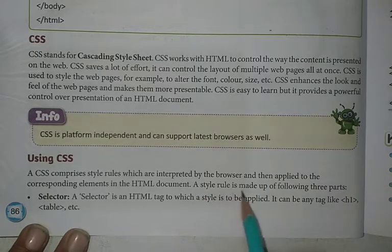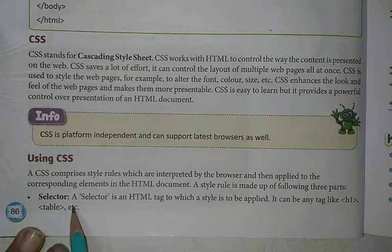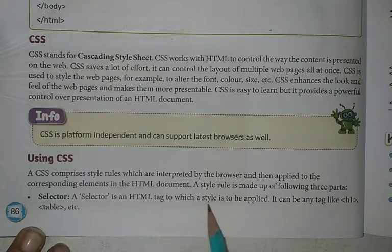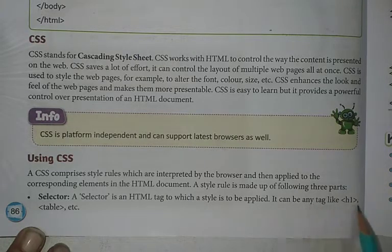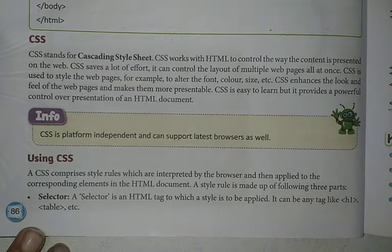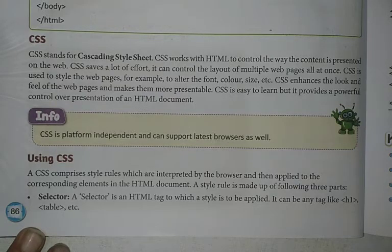A style rule is made of the following three parts. The first is the Selector. The selector is the HTML tag to which the style is to be applied — it can be any tag like a heading tag. The selector specifies which HTML tag you want to apply the CSS coding to — whether you want to apply it to the heading, the table, or the title.